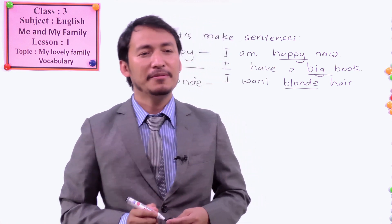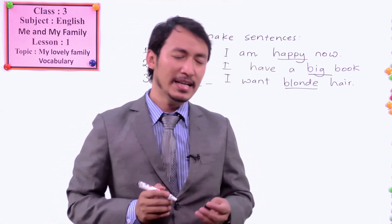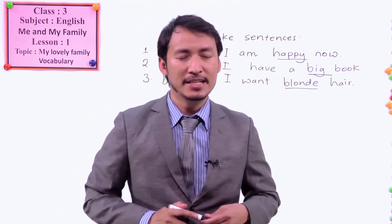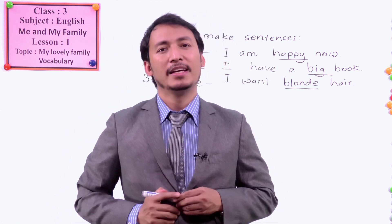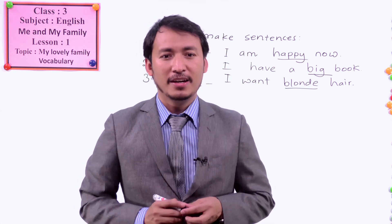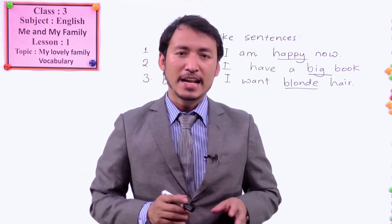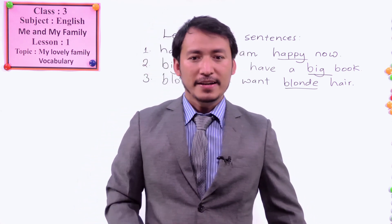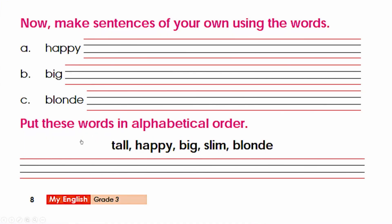Likewise, you can make many more such sentences with a describing word. Now let's see another exercise. What is it saying? Put these words in alphabetical order. We have tall, happy, big, slim, and blonde.